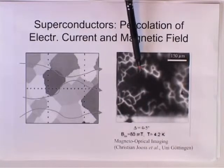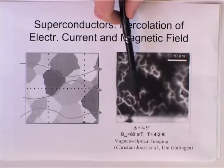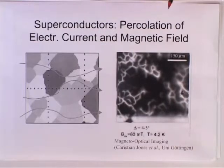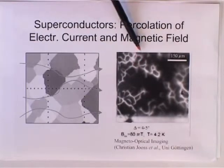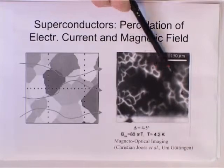The second image here is a magneto-optical image, which shows a superconductor, again polycrystalline, in a magnetic field, and the magnetic field penetrates the superconductor along the weakest grain boundaries.